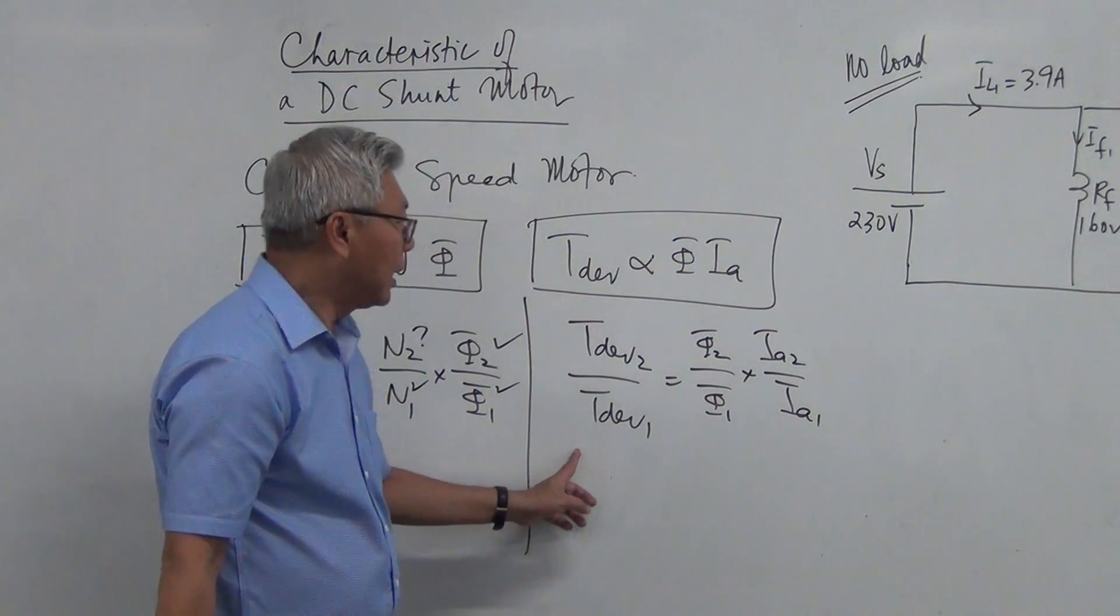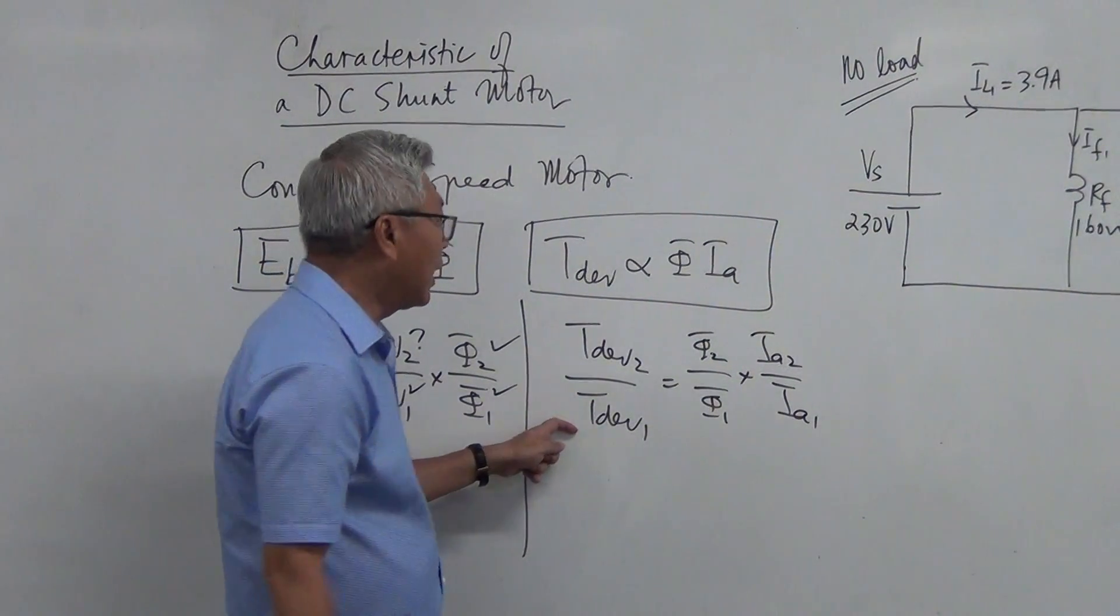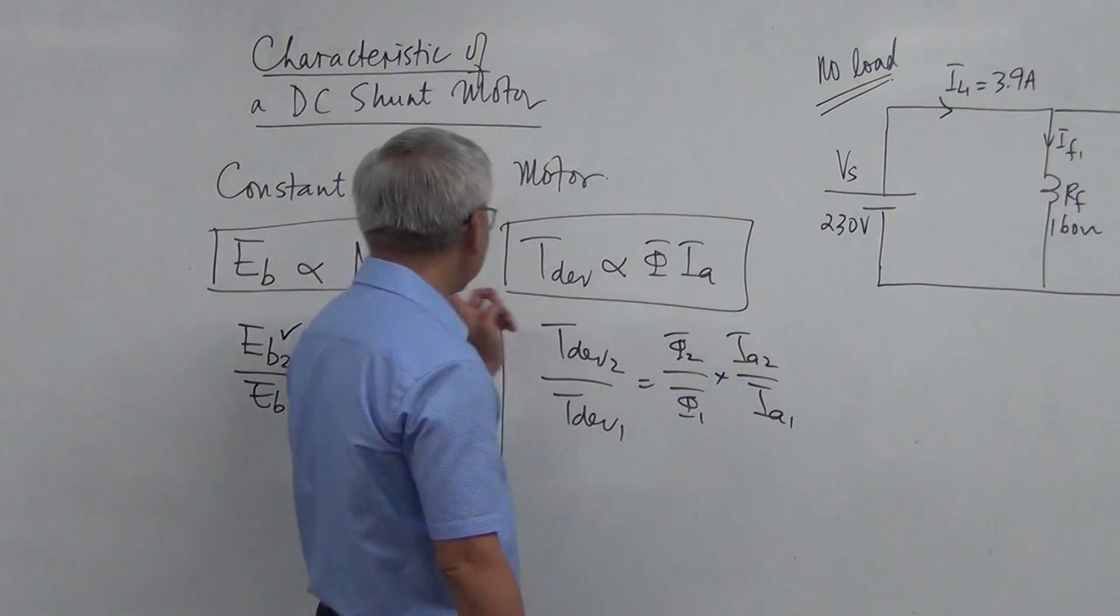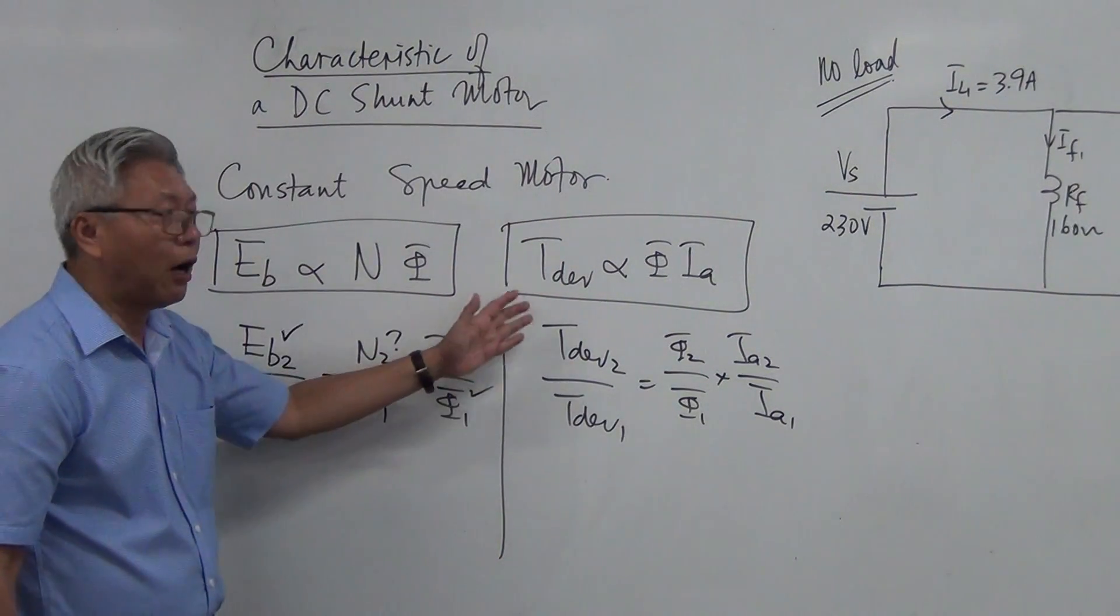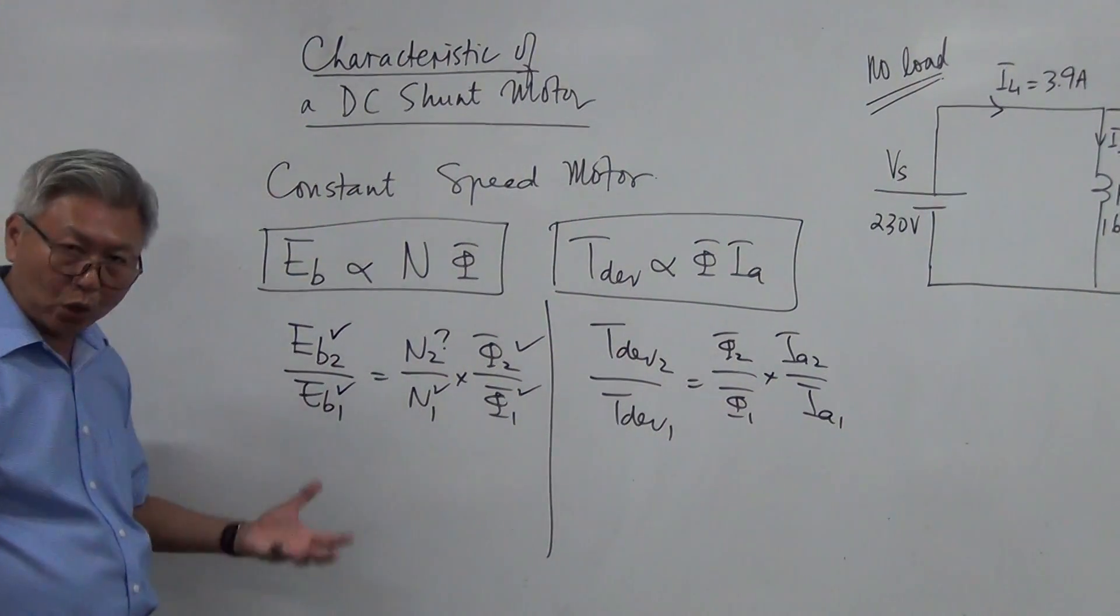So likewise, if you know the new torque as well as the original torque, and if you know the flux, you can find the new armature current. Now these two proportional relationships are often used in our motor application examples to find unknowns.